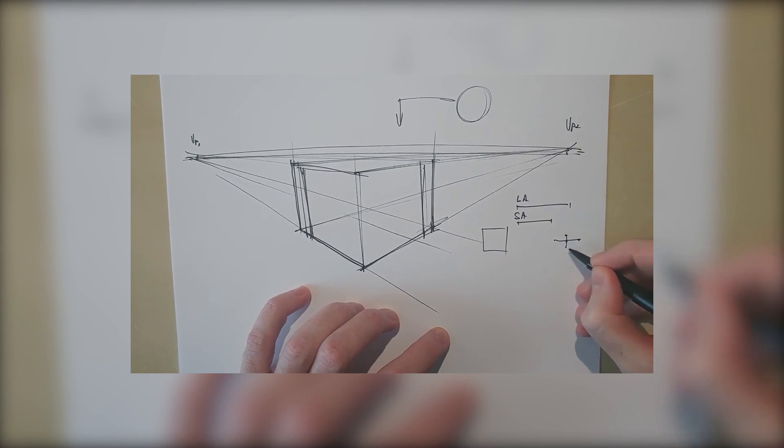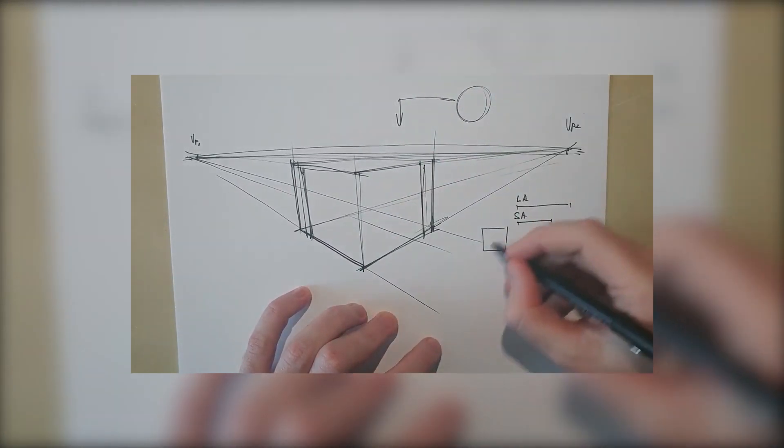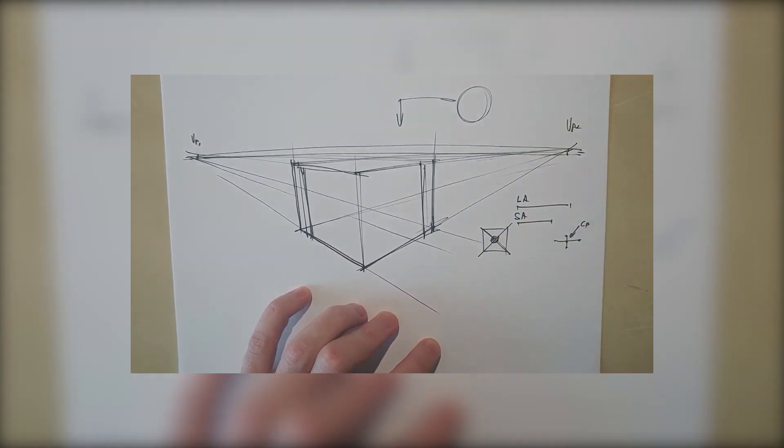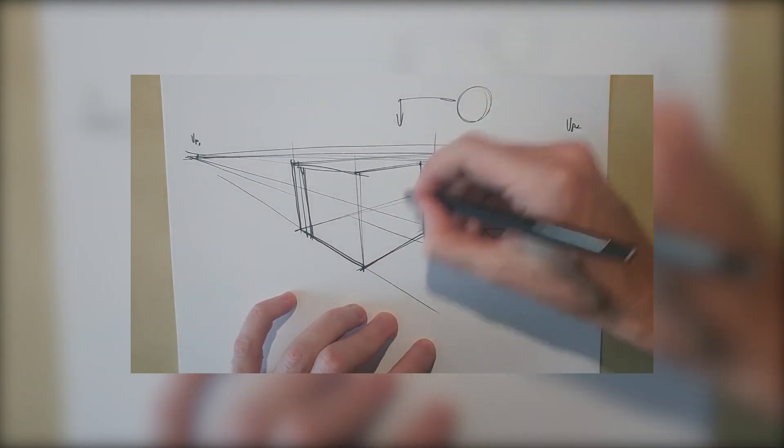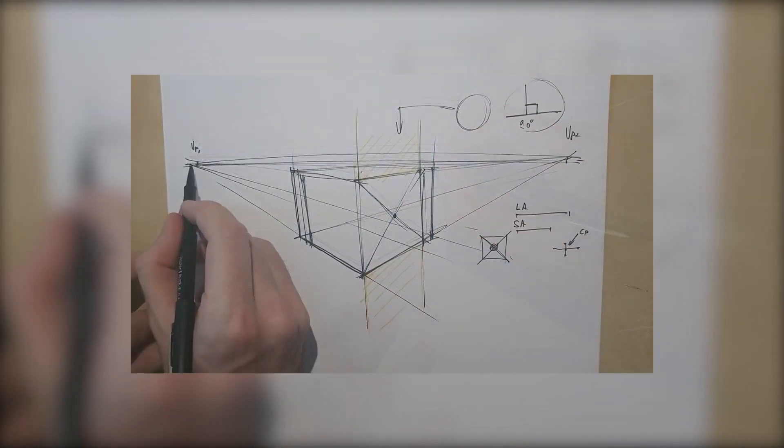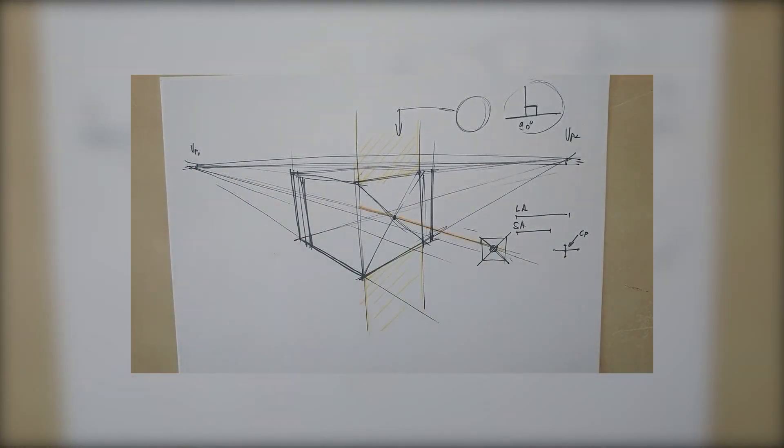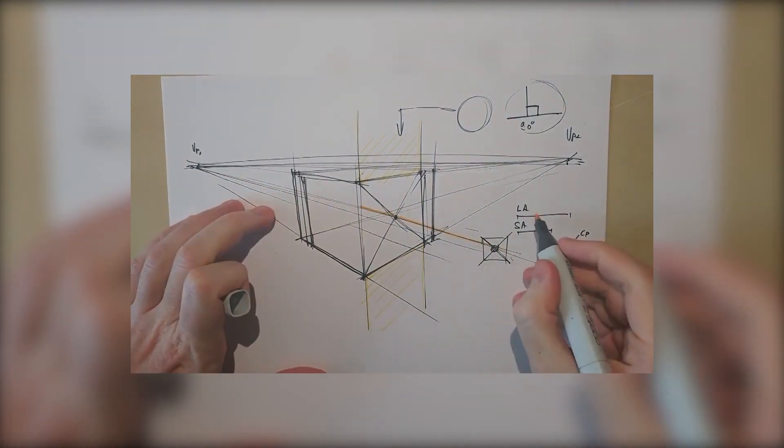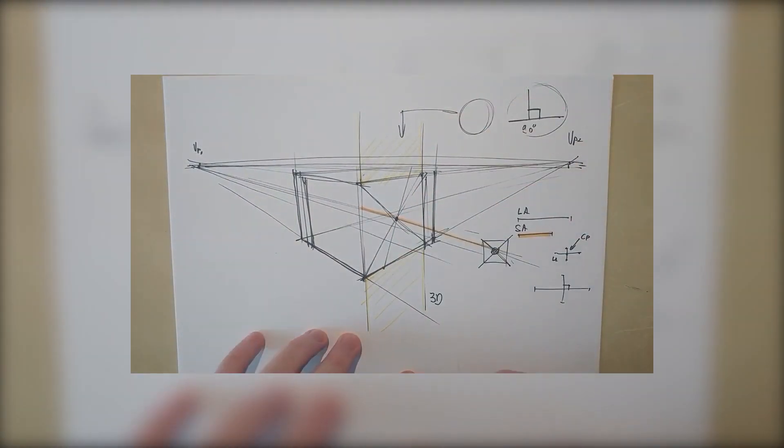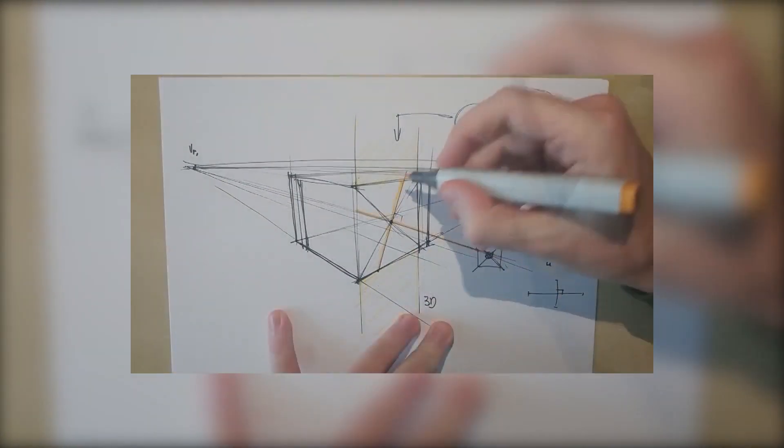This center point is usually easy on a square because you just connect the four edges and that's your center point. So in 3D space we do the same, connect the edges and we have a center point. I can draw a line from this vanishing point through this one. This will be our short axis, a perpendicular line. This will be our long axis.